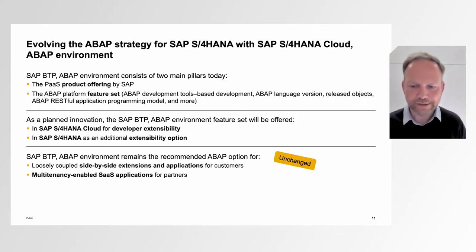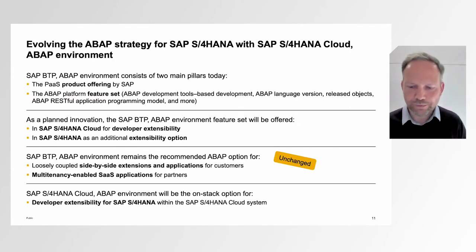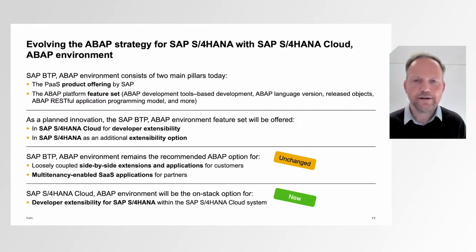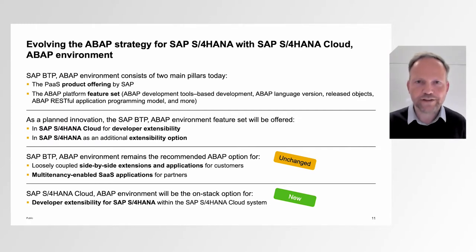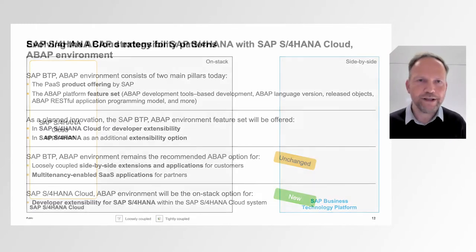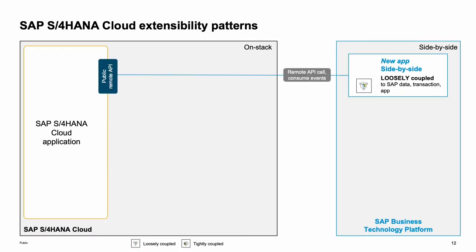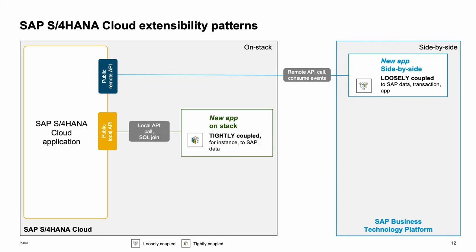What we added is developer extensibility for S/4HANA, which uses exactly the same feature set from Steampunk introduced four years ago. To explain this from an S/4HANA Cloud perspective: the extensibility patterns start with the side-by-side approach, where the side-by-side application calls remote APIs from the S/4HANA Cloud system.